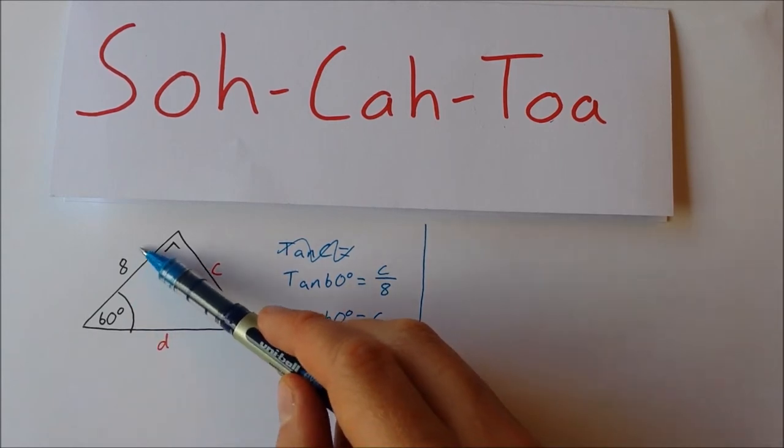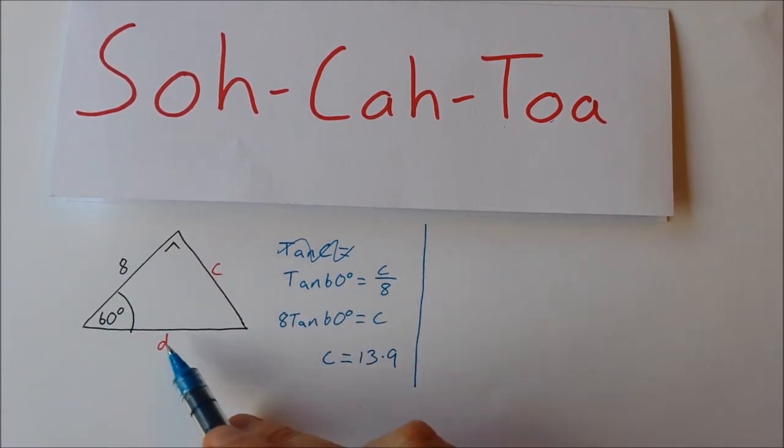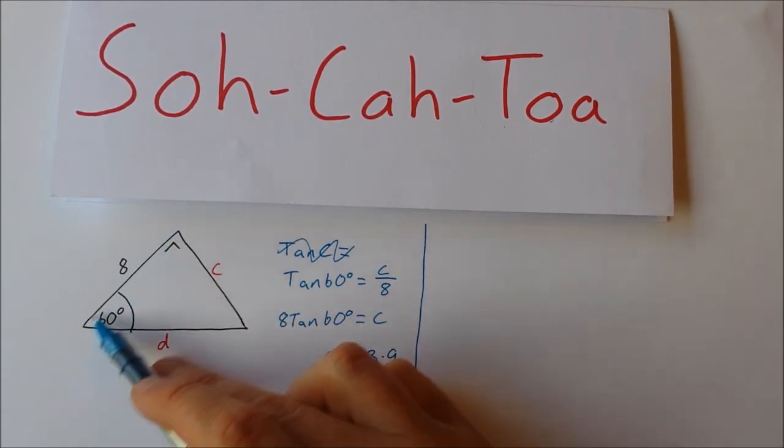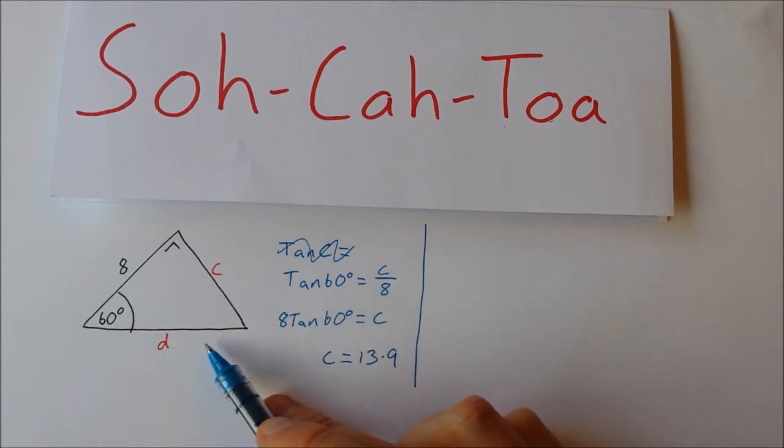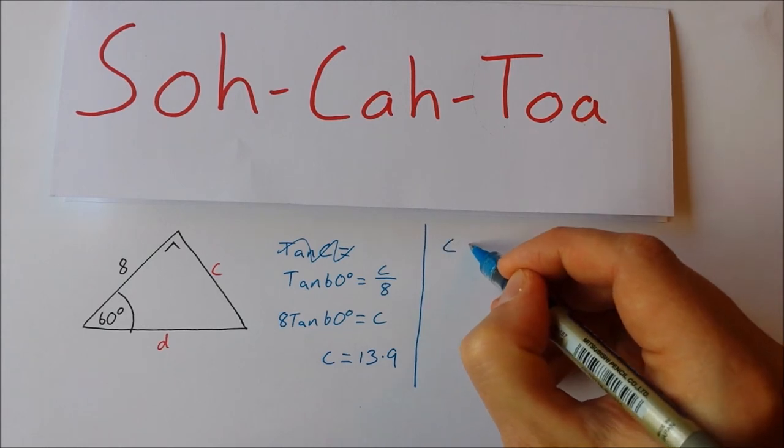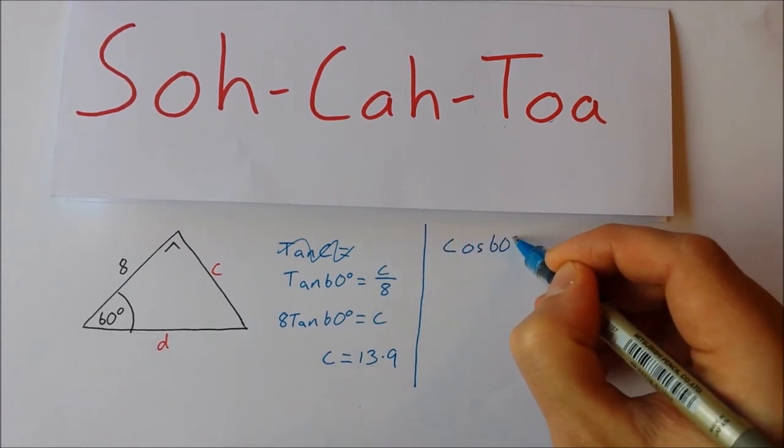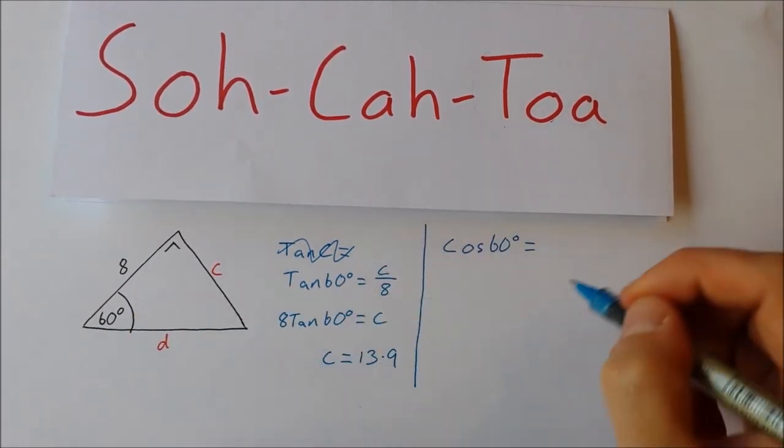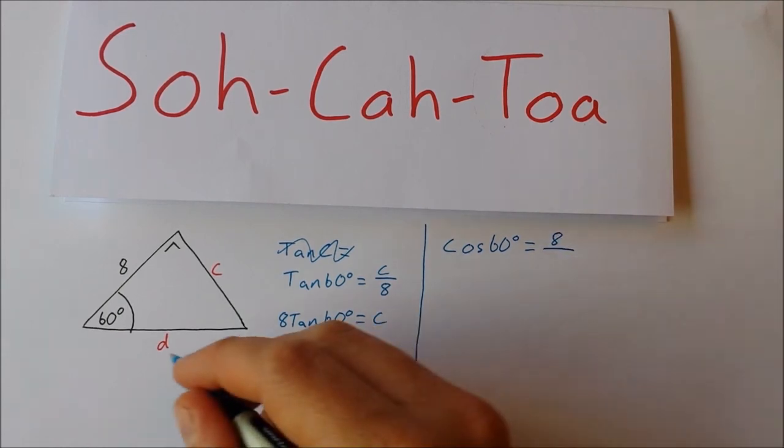Now the last one, this is the one where the unknown side is on the bottom. So we're looking for 'd'. We have 8, we have 60 degrees. So we have the adjacent, we're looking for the hypotenuse, so that means we're going to use cosine.